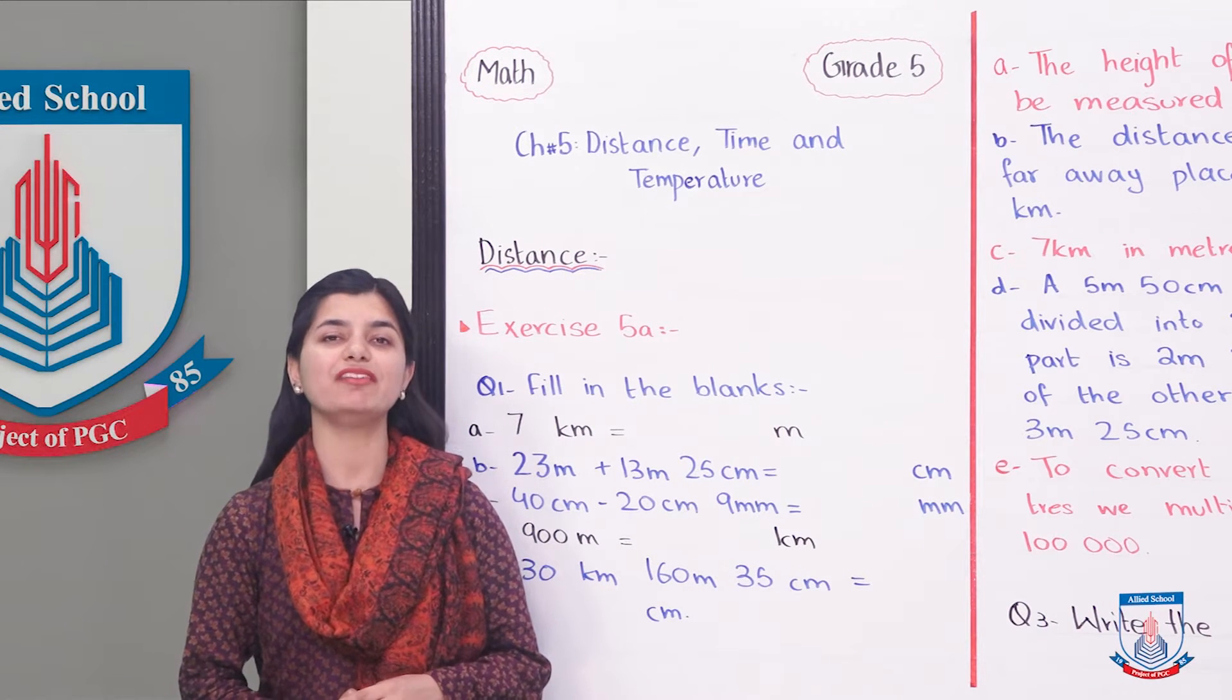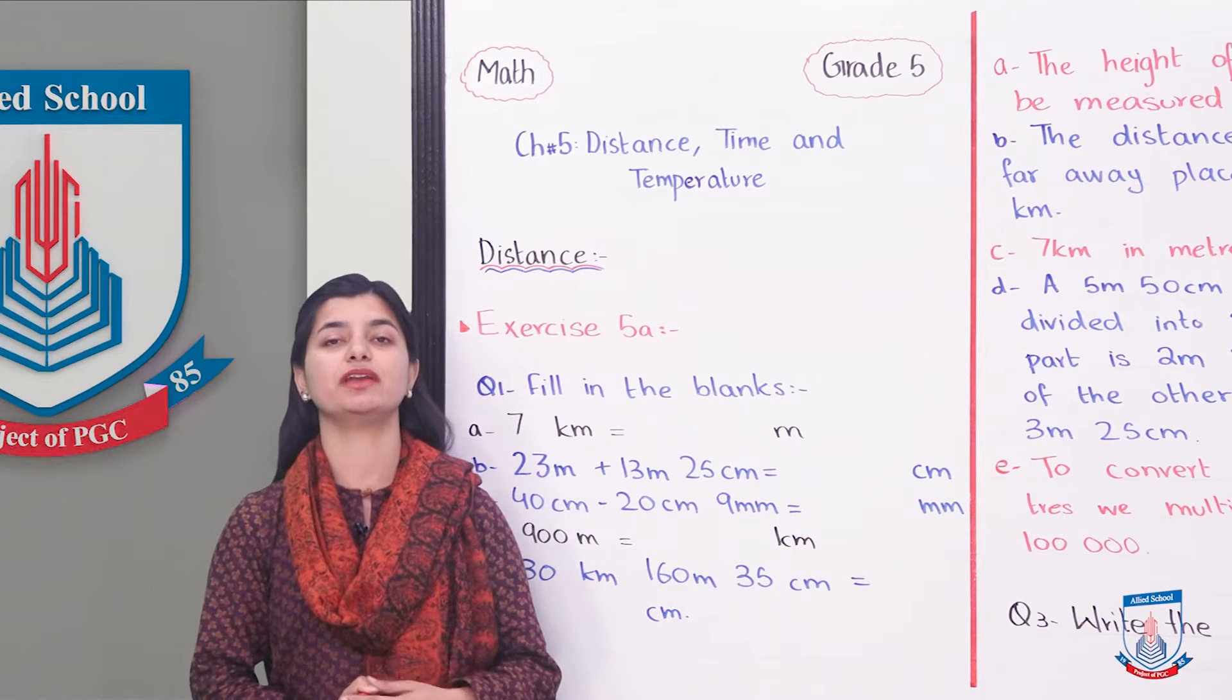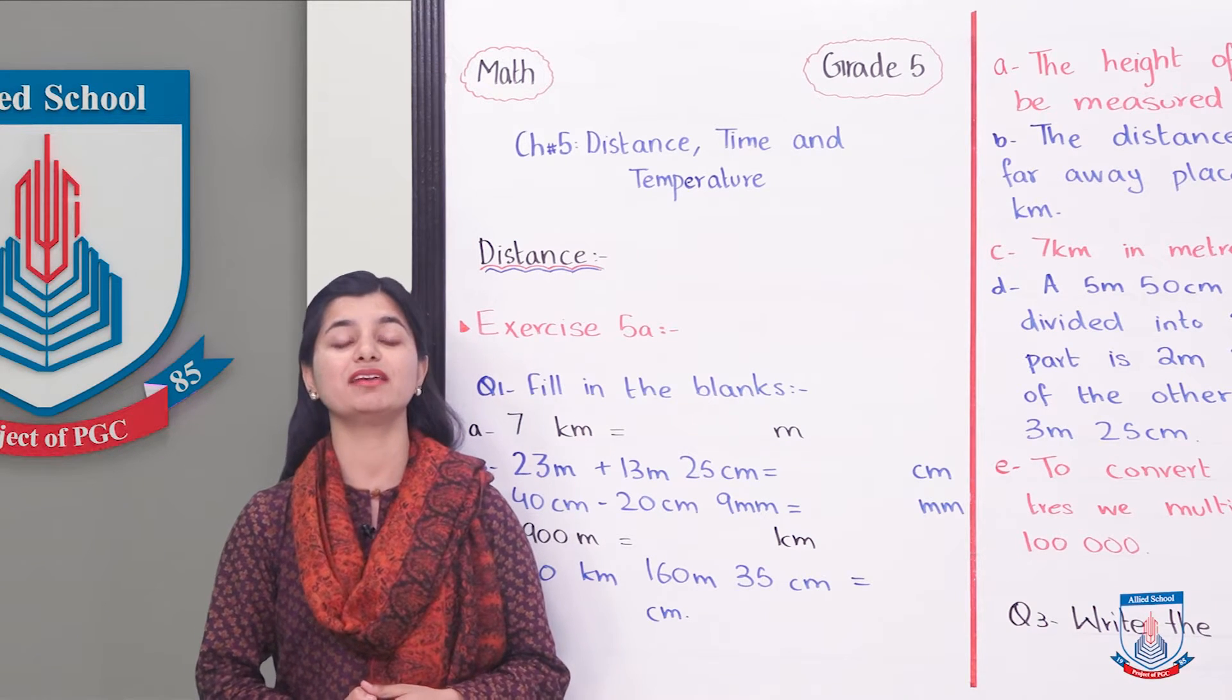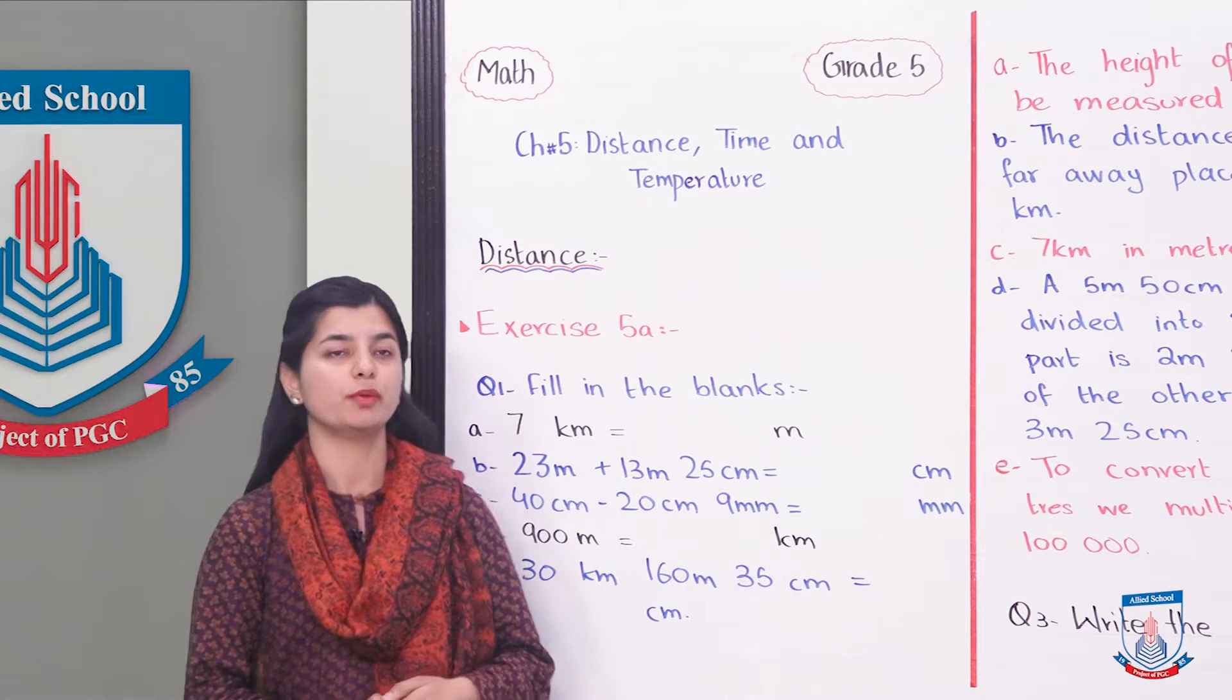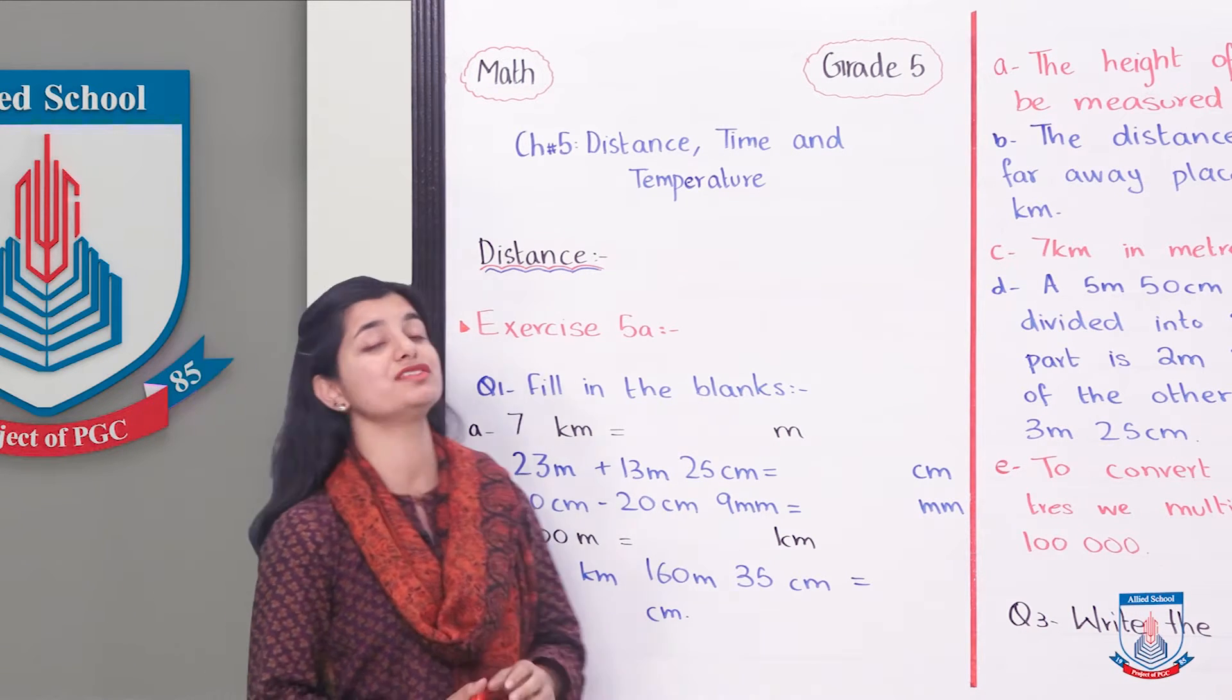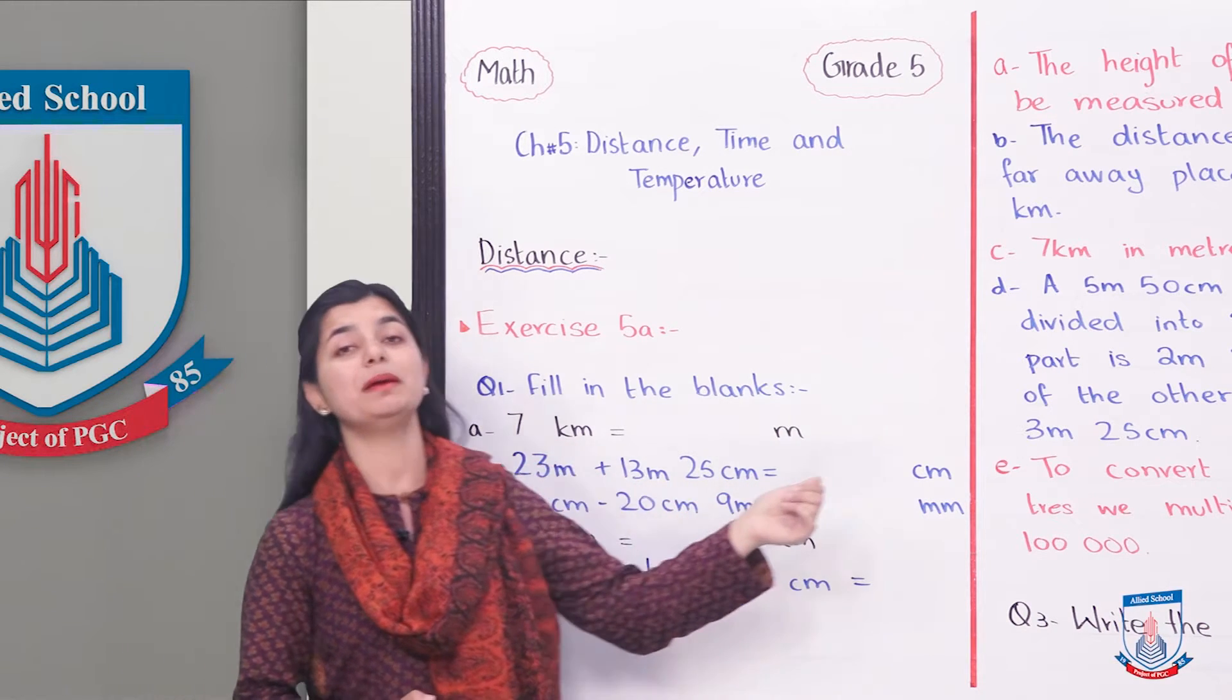In exercise 5A we have to utilize the concepts that we learned about distance and conversions in the last lecture. First we will see the fill in the blanks part. Question number 1 part A is 7 km equals to dash meters.